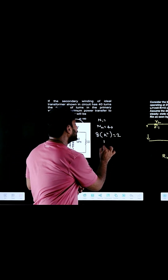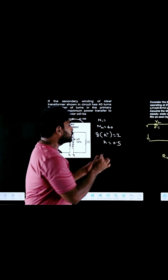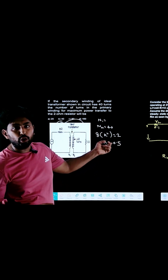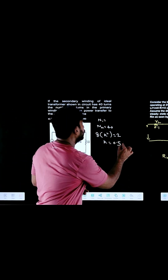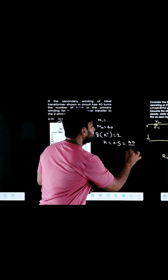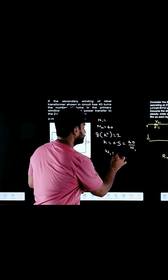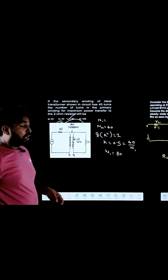From that, k = 0.5. Since k = N2/N1 = 40/N1, we get N1 = 80 turns. So N1 equals 80 turns — very simple.